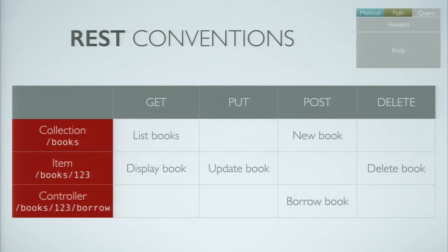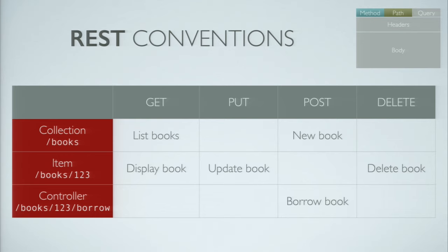REST is a convention through which we can use HTTP to access methods of our API. These are usually divided into collections, items, and a special entity called the controller. The collection endpoint — in our example, just 'books' — allows us to fetch a list of books via a GET request, or create a new book via a POST request. An item has an endpoint with an ID, like slash books slash 123, which identifies a specific book. A GET request fetches the book's information, a PUT request updates it, and a DELETE request deletes it.